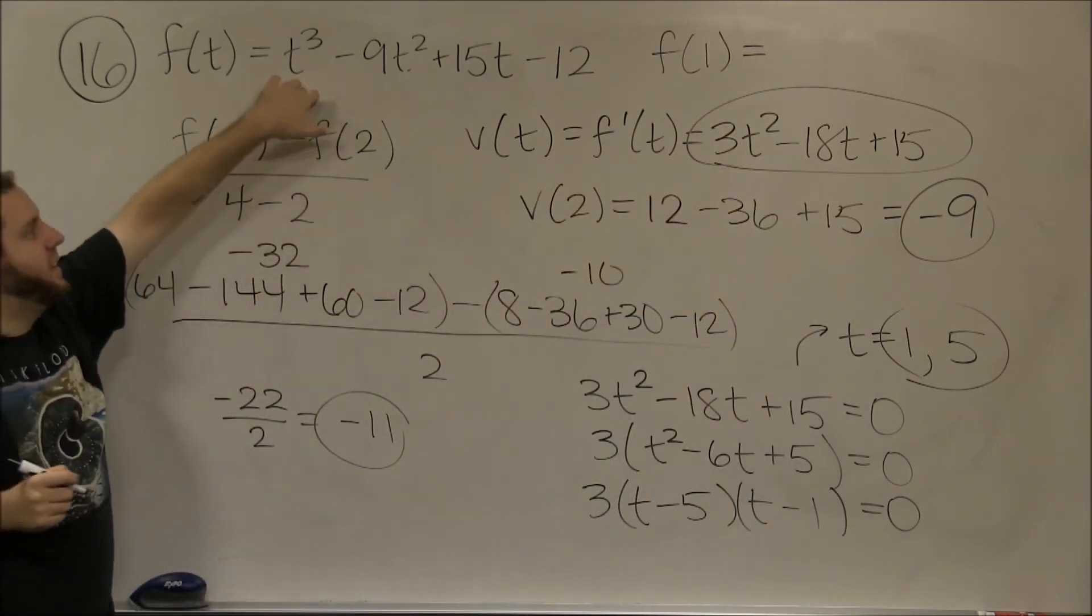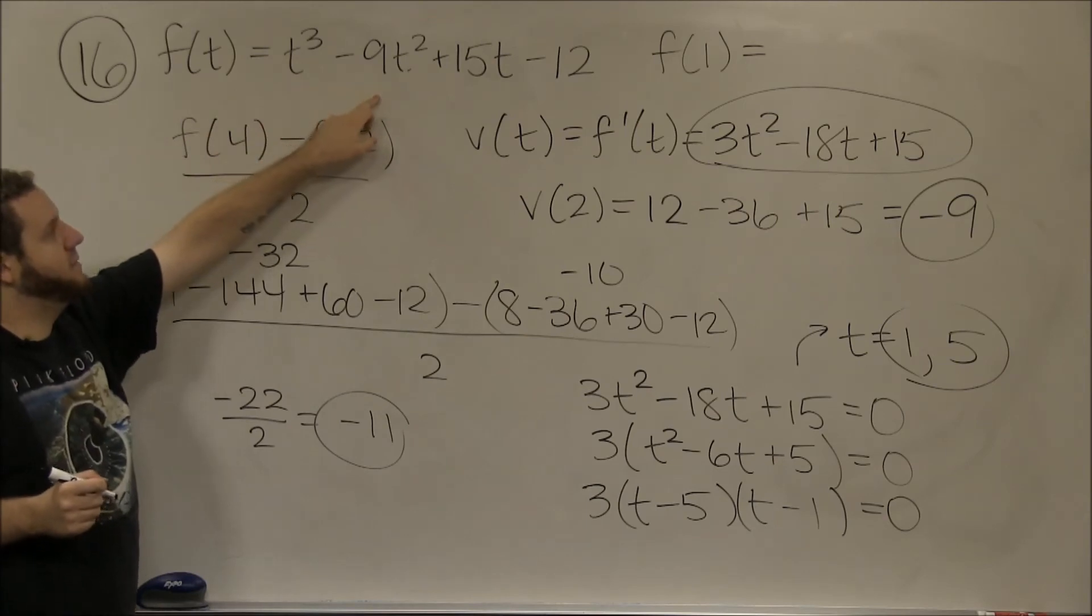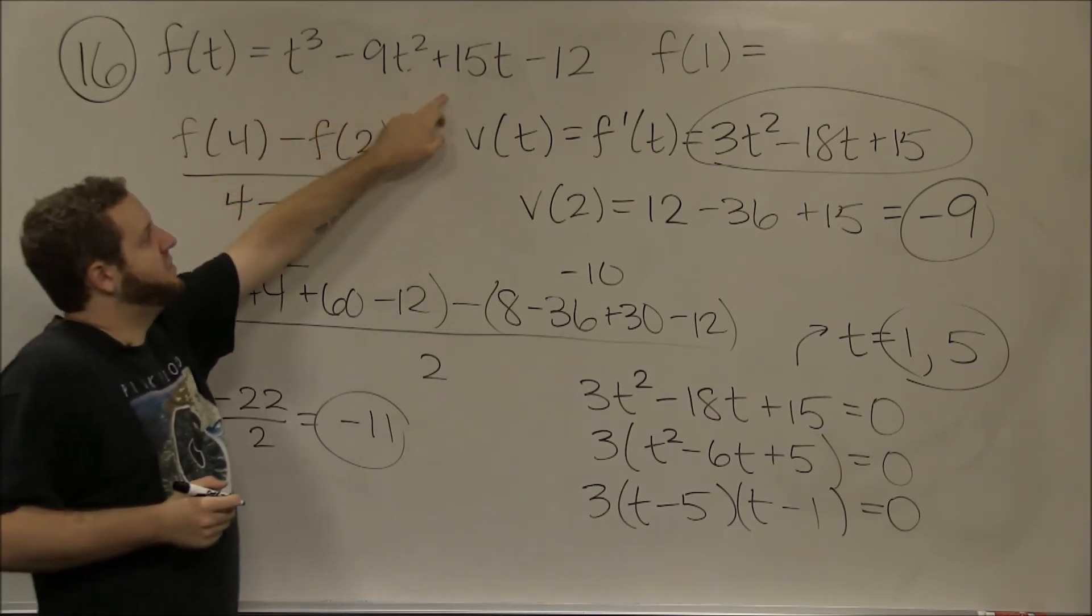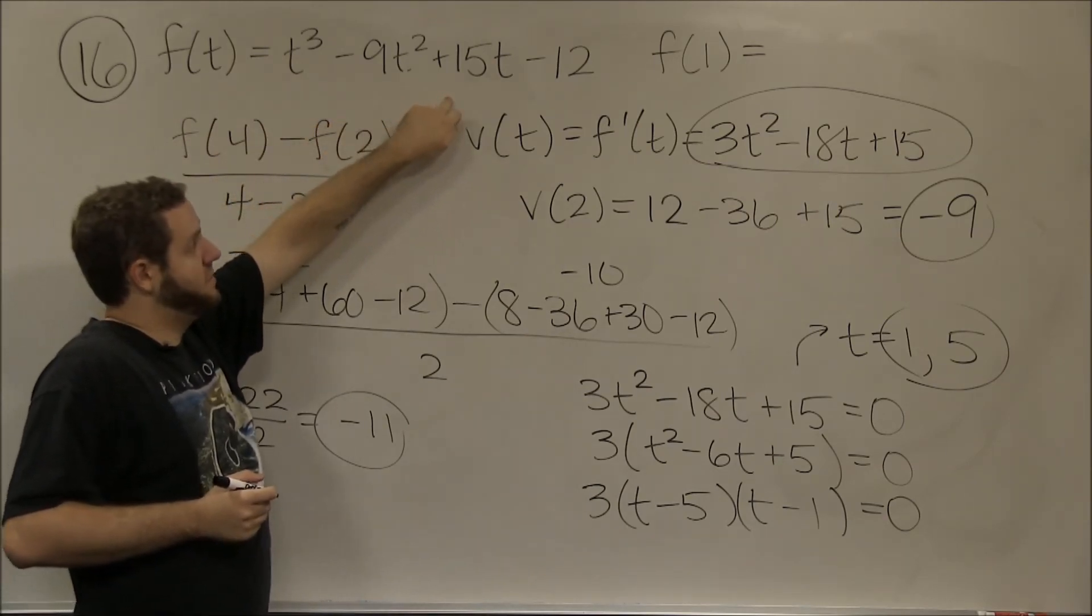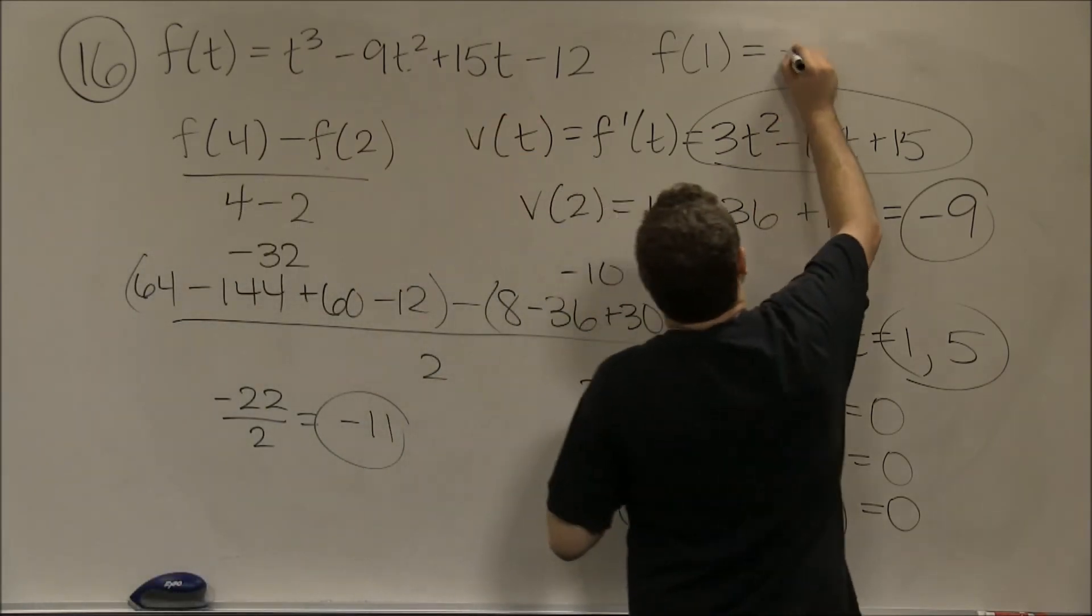That should be pretty simple, just plug that in. We get 1 minus 9, which is negative 8, plus 15, which is 7, minus 12, which is negative 5.